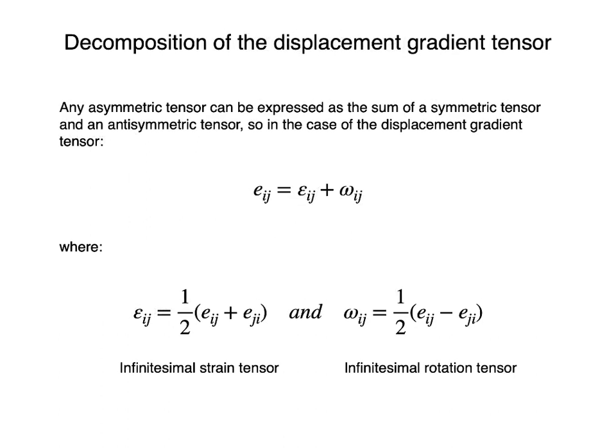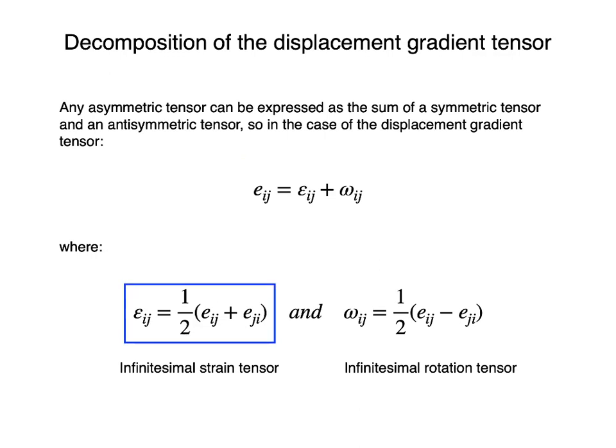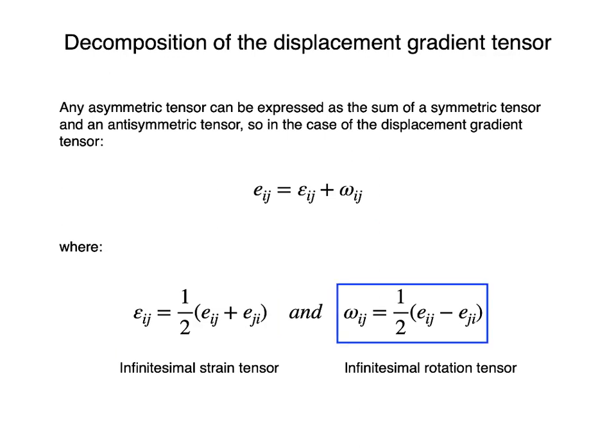Let's look at the displacement gradient tensor E. This tensor, as any asymmetric tensor, can be expressed as the sum of a symmetric tensor and an antisymmetric tensor. The symmetric tensor epsilon is the infinitesimal strain tensor. The antisymmetric tensor omega is the infinitesimal rotation tensor.